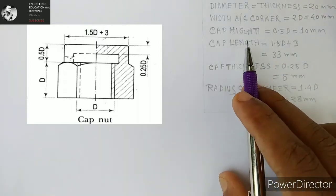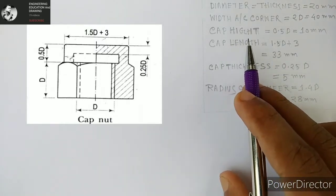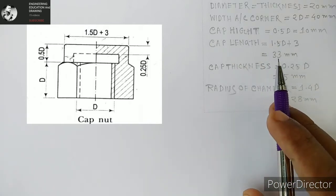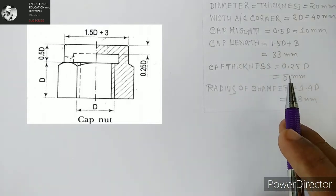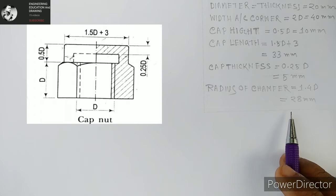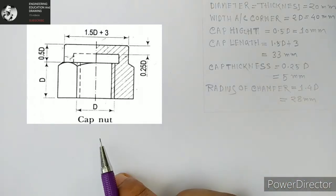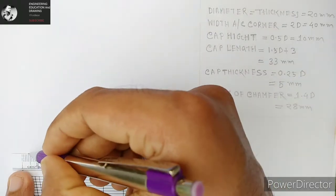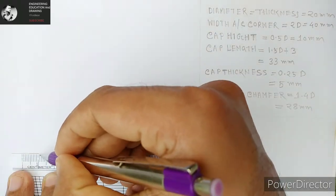The width across corner is 2D, that is 40 millimeters. Cap height, cap length, and cap thickness are respectively 10 millimeters, 33 millimeters, and 5 millimeters. Radius of chamfer is 28 millimeters.